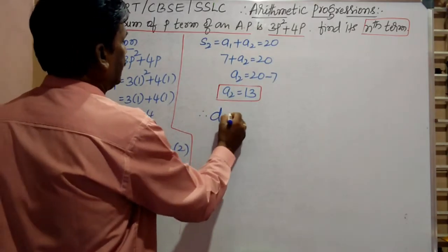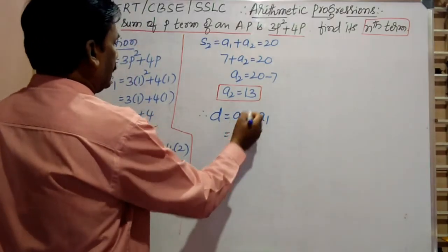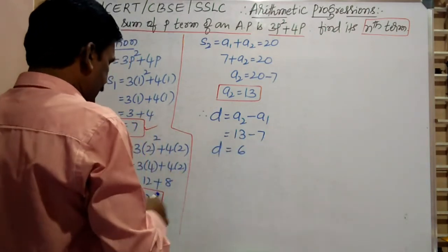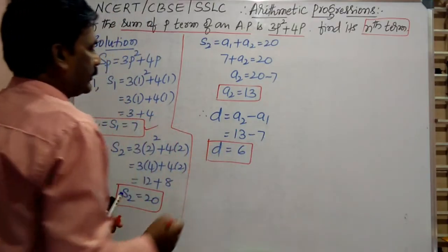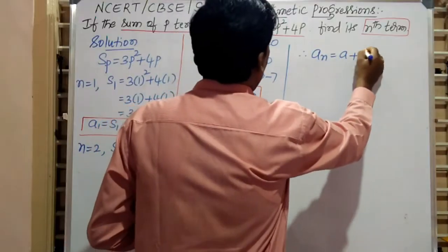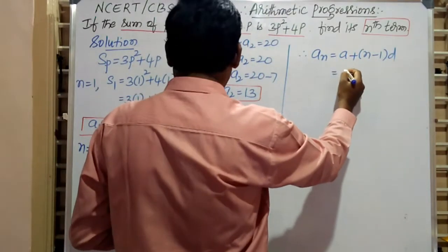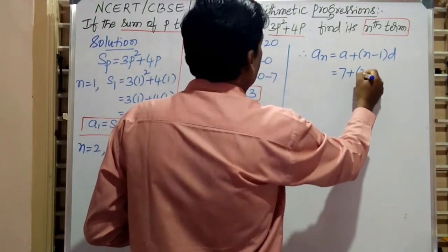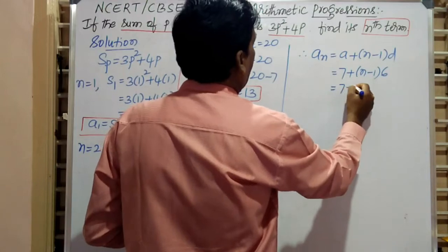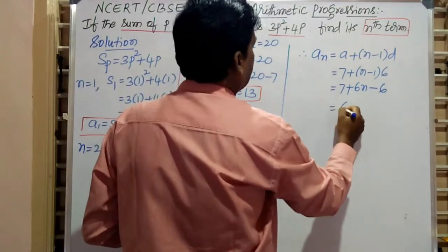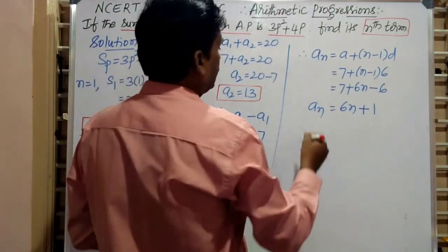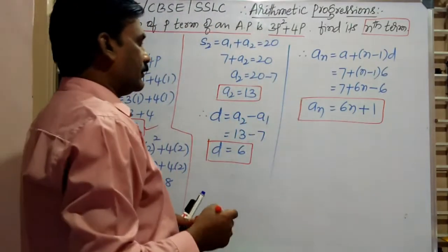D is equal to A2 minus A1, which is 13 minus 7, so D is equal to 6. This is the common difference, and we can easily find it. Therefore, the nth term formula is An equals A plus (n minus 1) into D. A is the first term, that is 7, plus (n minus 1) into D which is 6. That gives 7 plus 6n minus 6, equal to 6n plus 1. Therefore, the nth term of the given arithmetic progression is An equals 6n plus 1.